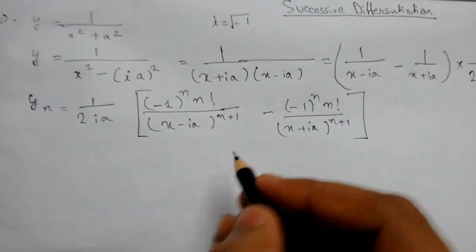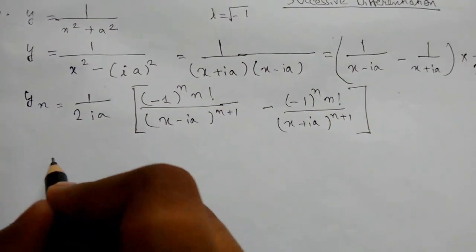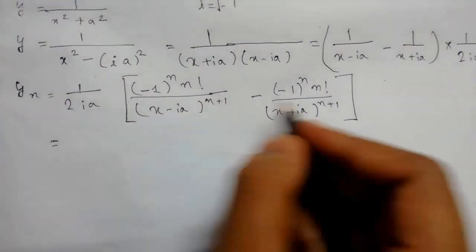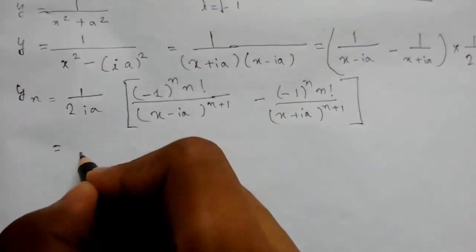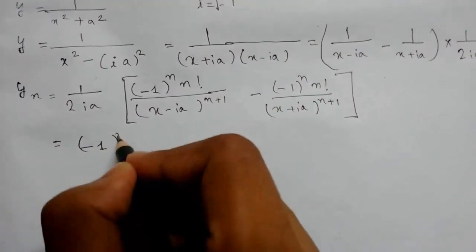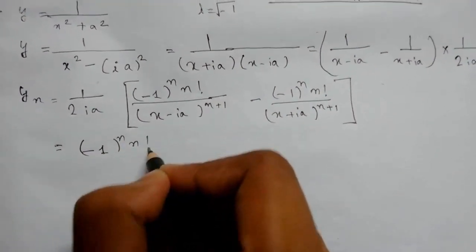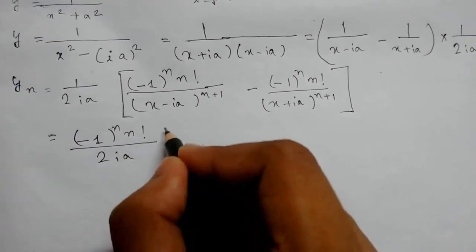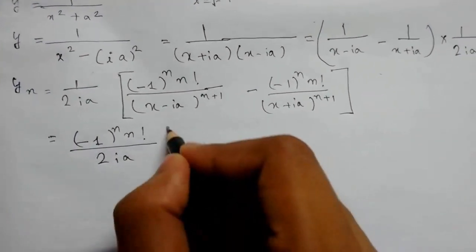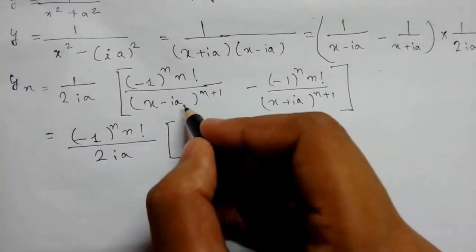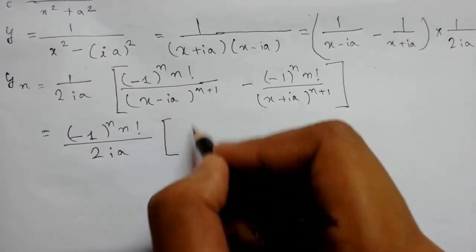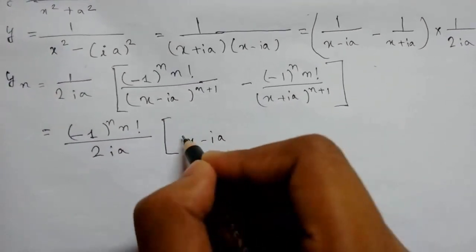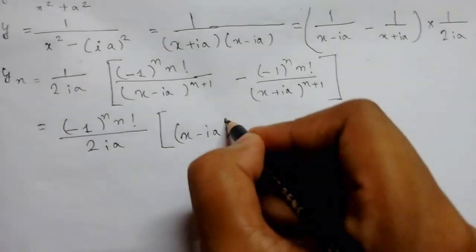Now we simplify carefully. Taking (−1)ⁿ · n! / (2ia) as a common factor, the denominators move to the numerator as negative powers, giving (x − iota·a)^(−n+1) minus (x + iota·a)^(−n+1).